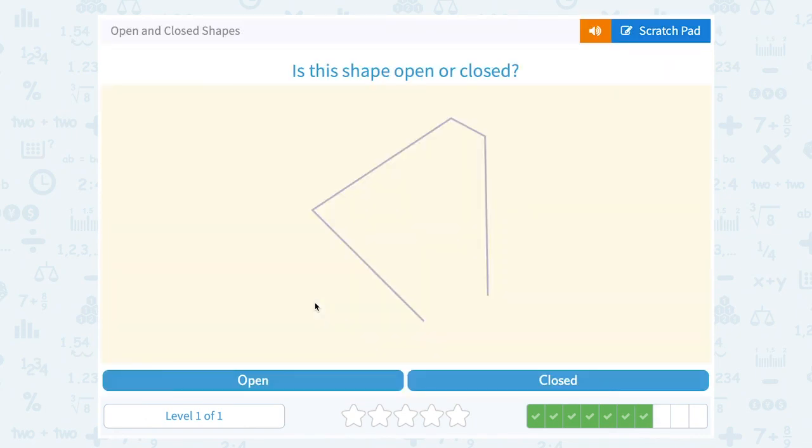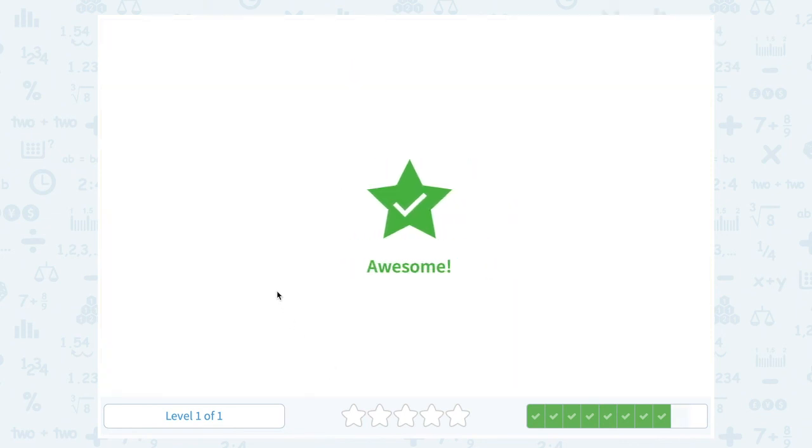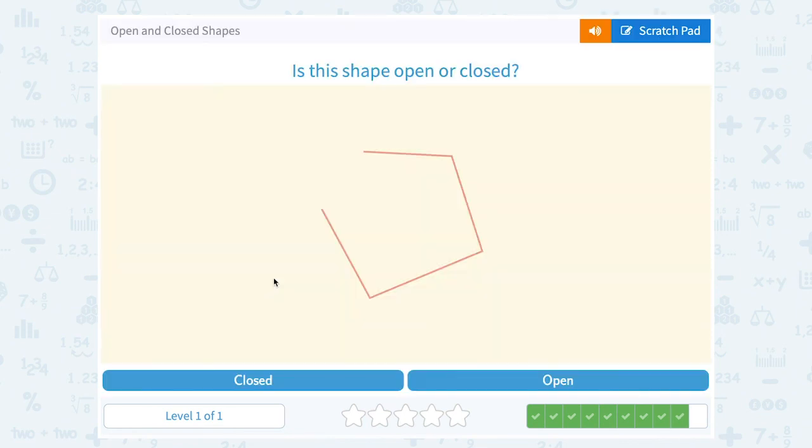This would be an open shape, right? We have this big space opening right here, where the segments aren't connected. Another open shape, right? Right here, we have a big space. And this one is also open, a big space where our segments are not connected.